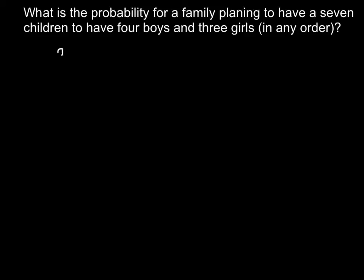For the second child, once again there are two choices — it can be a girl or a boy — so we put two. The same rule applies for all seven children, so every time we count each child we have two different probabilities.